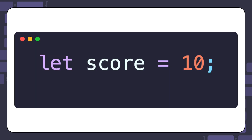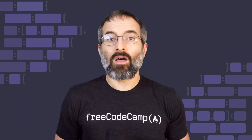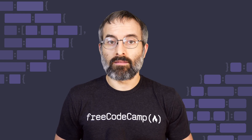Here's an example of declaring and assigning a variable with let. In this case, the variable score is declared and assigned the value 10. If you want to update the value later, you can easily do that — now score holds the value 20. This makes let particularly useful when you know the value of a variable will change as your program runs.